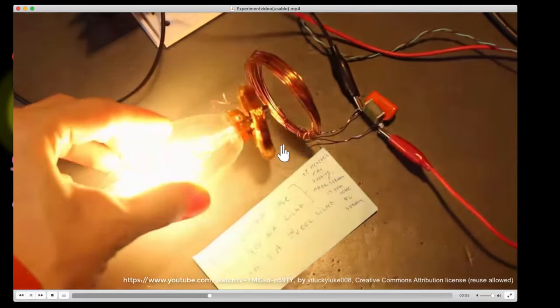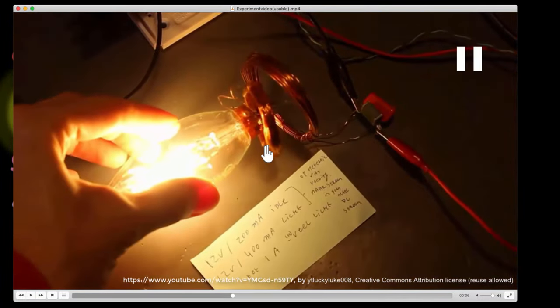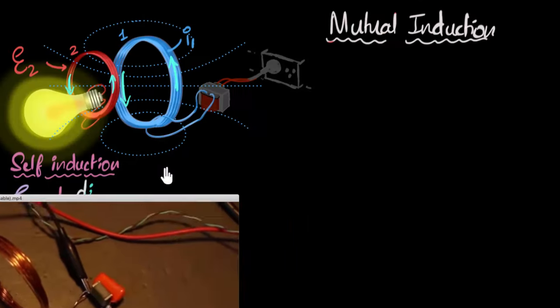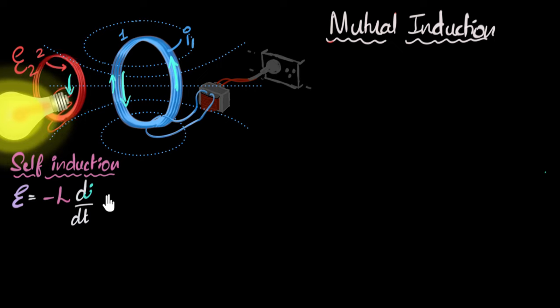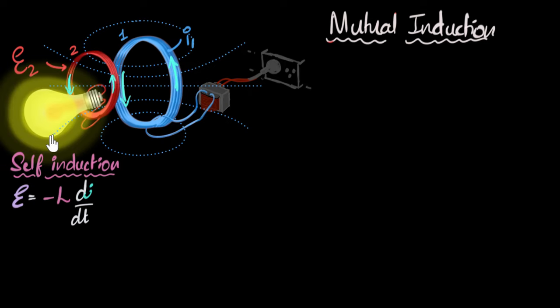We also saw that when you take the secondary coil far away, the bulb stops glowing — it's only when you come closer that it glows. Why does it stop glowing when taken far away? Well, when you take it far away, the strength of the magnetic field reaching this coil becomes very weak. The magnetic field linked with this coil becomes very weak, so the flux changes are very weak, the induced EMF is very weak, and as a result the current induced will be smaller and the bulb won't glow.